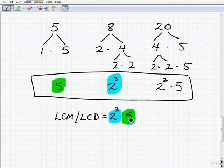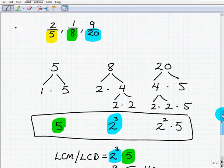So this is 2 cubed times 5, which of course is 2 cubed is 8, 8 times 5, which is 40. So our LCD or LCM of these numbers is 40.